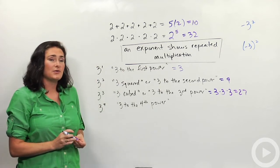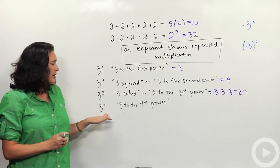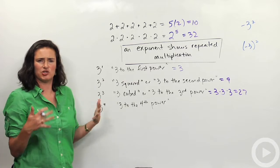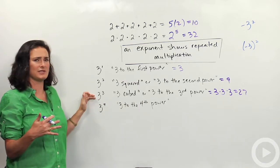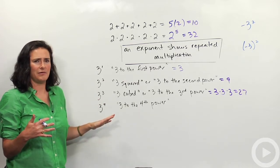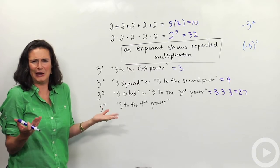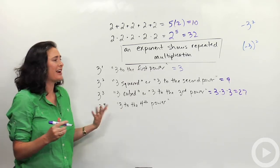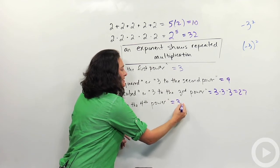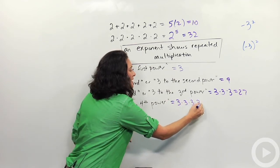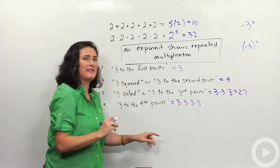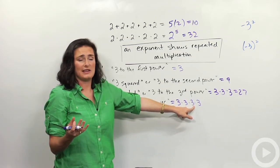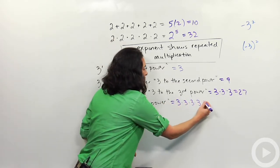3 cubed is 27. The last one I put up here is 3 to the fourth power. It doesn't have a shortcut name like squared or cubed — I don't think you say 'fourthed'? I made that up. Usually people say 3 to the fourth power, and this means 3 times itself 4 times. You calculate it as 3 times 3, which is 9, times 3 again, times 3 again, which is 81.